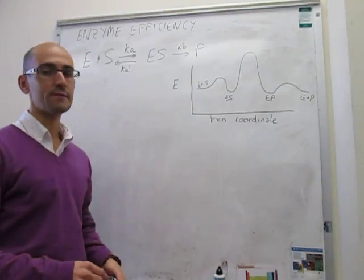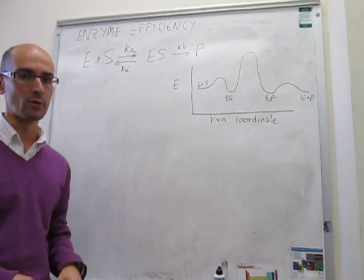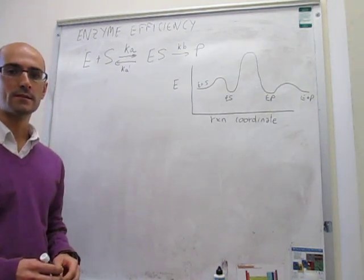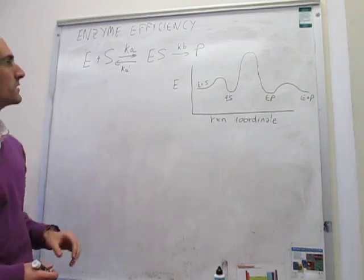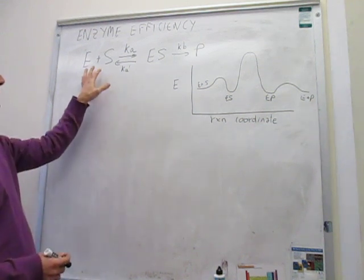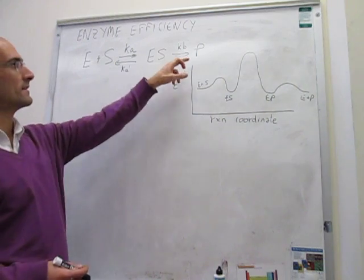Okay, ladies and gentlemen, this is the last video that I want to show you today. The topic is enzyme efficiency, and what we're going to try to do here is to see what are the factors that control the efficiency of an enzyme. So what we have here is a general scheme for an enzyme catalytic reaction. Enzyme plus substrate react to generate enzyme substrate complex, and that gives products.